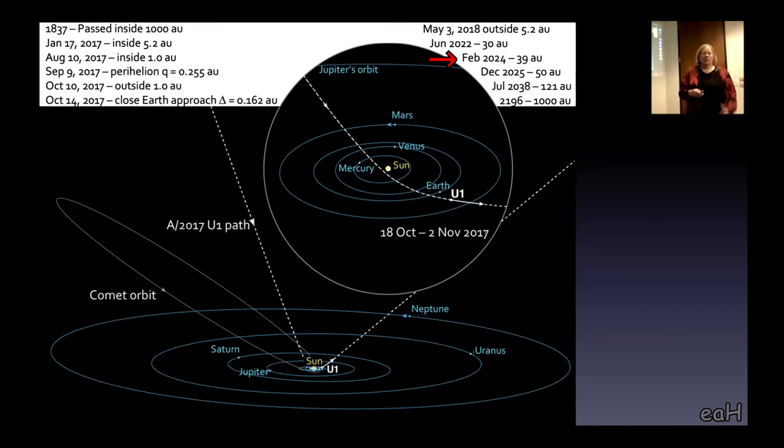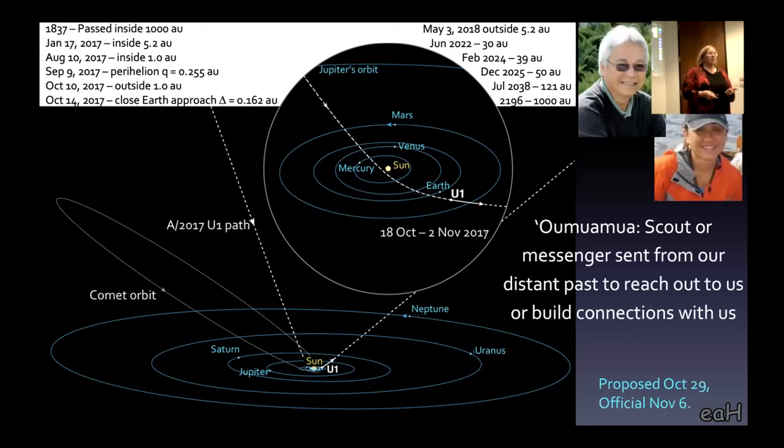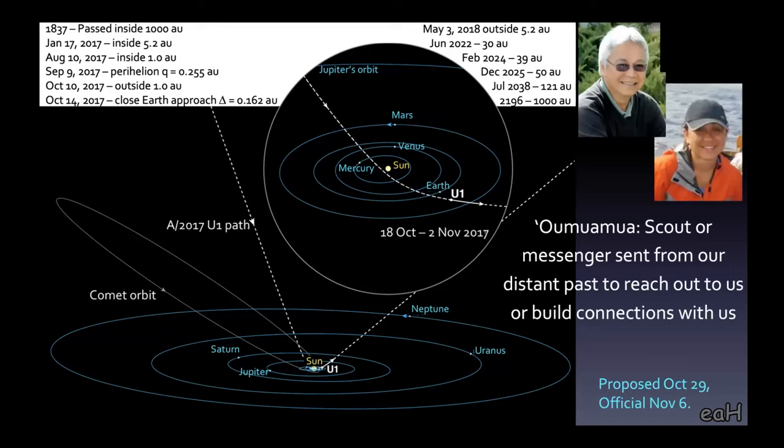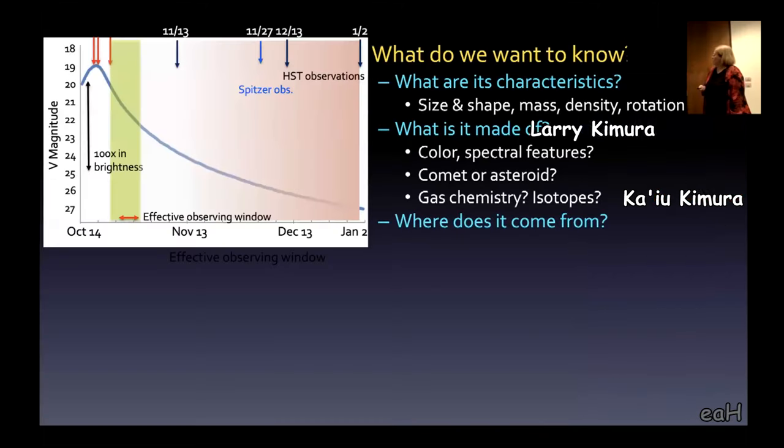People ask, where is it now? It's still in the solar system. A year ago, June, it was just past the orbit of Neptune. It'll be just past the orbit of Pluto in February of next year. We asked some local Hawaiian experts to propose a name. Larry Kimura and Hiao Kimura proposed 'Oumuamua, a scout or messenger from the distant past reaching out to us.